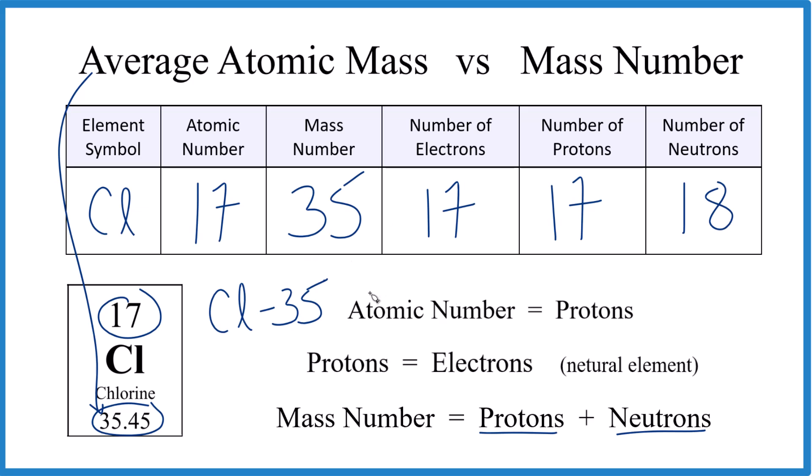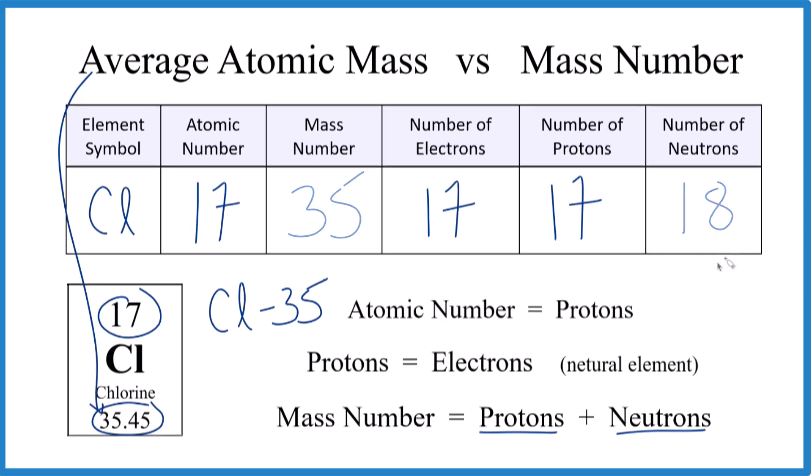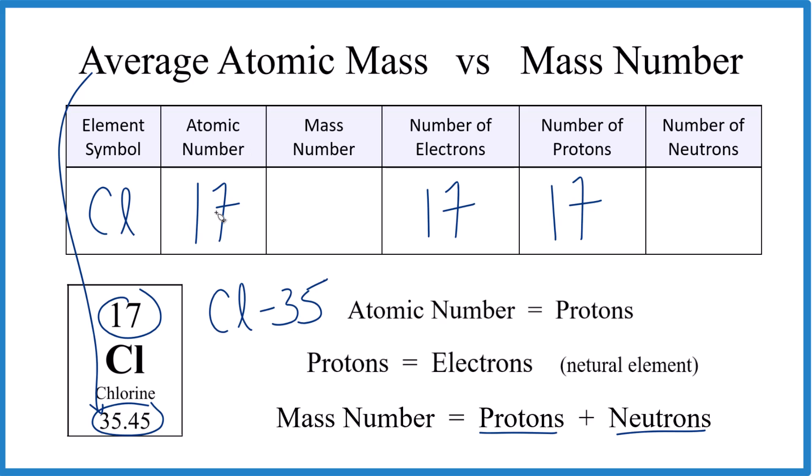Let's do another common isotope here of chlorine. So since it's chlorine, it's going to have an atomic number of 17. It'll have 17 protons and then 17 electrons. That doesn't change. But let's say we have an isotope with 20 neutrons. This is pretty common. So we want to figure the mass number out. Protons plus neutrons, 20 plus 17, 37. So chlorine-37, that's another isotope.